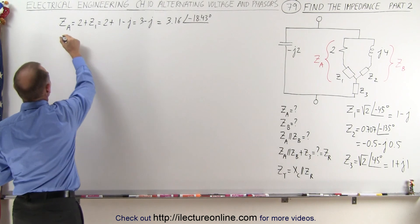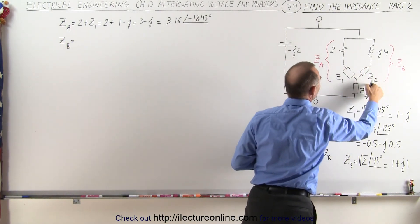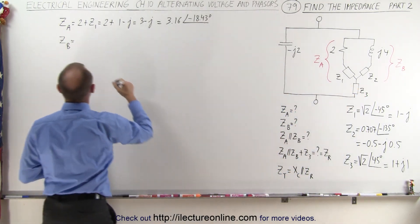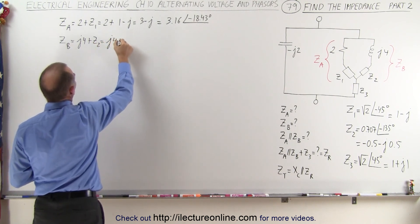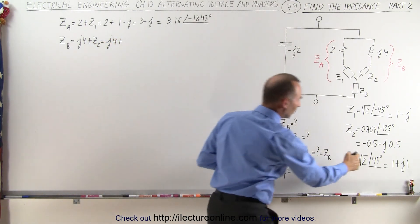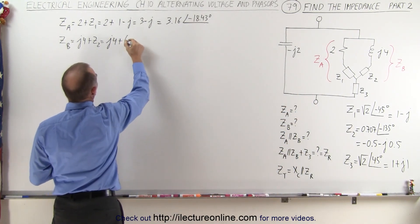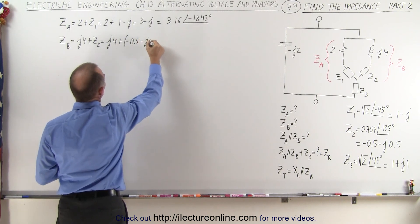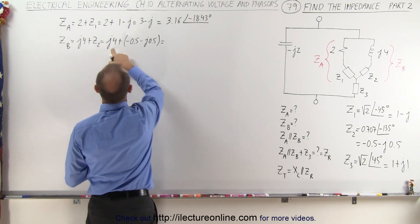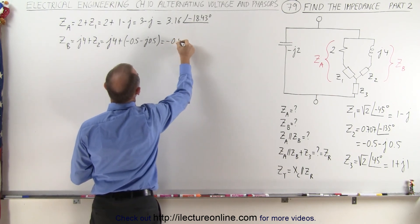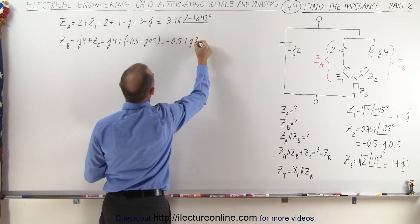Now we're ready to find Z sub B. Z sub B is equal to the sum of J4 and Z2. So that would be J4 plus Z2, which is J4 plus minus 0.5 minus J0.5. So that would be equal to minus 0.5 plus J3.5.